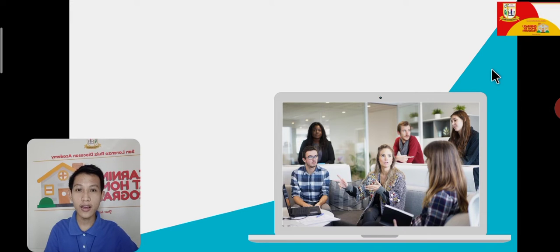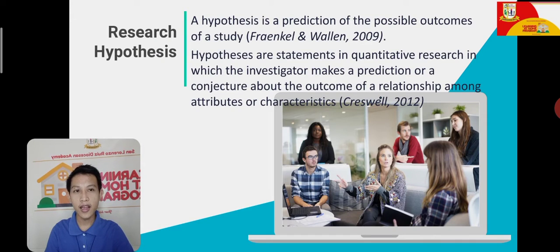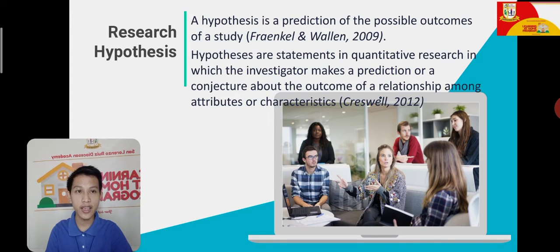What are research hypotheses? Research hypotheses is a prediction of the possible outcomes of the study, according to Frankel and Wallen (2009). Hypotheses are statements in quantitative research in which the investigator makes a prediction or a conjecture about the outcome of the relationship among attributes or characteristics, according to Cresswell (2012).